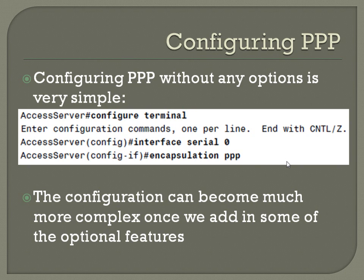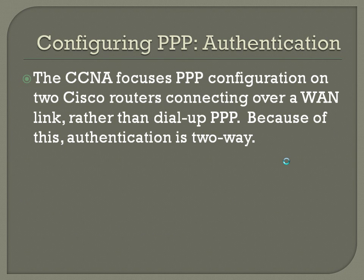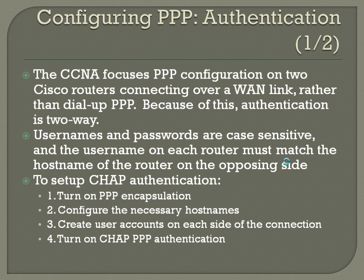The CCNA focuses PPP configuration on two Cisco routers connecting over a WAN link rather than dial-up PPP. Because of this, authentication is going to be two-way. Usernames and passwords are case sensitive, and the username on each router must match the hostname of the router on the opposing side. For example, a router named Bob connecting to a router named John will use 'John' as the username, and vice versa.